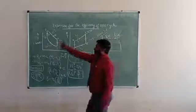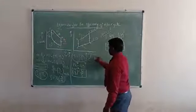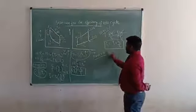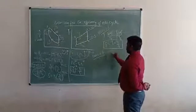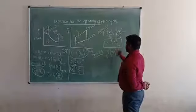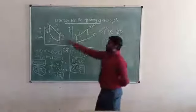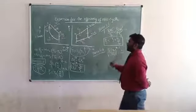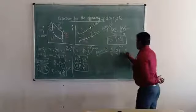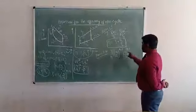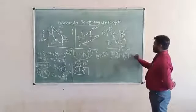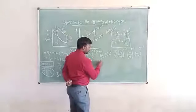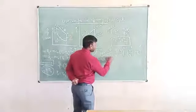Next, for process 3-to-4, which is again adiabatic expansion, we write T3/T4 = (V4/V3)^(γ-1). Note that V4 = V1 and V3 = V2, so (V1/V2)^(γ-1) = Rc^(γ-1). Therefore T4 = T3 / Rc^(γ-1). Also, P3 can be related to P4 using Rc^γ.